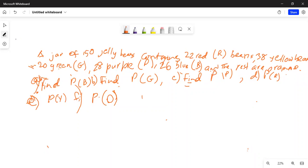There is a jar of 150 jelly beans containing 22 red beans, 38 yellow beans, 20 green, 28 purple, 26 blue, and the rest are orange.